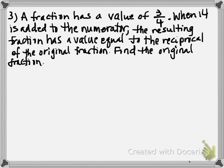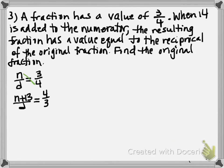In the second condition, we change the numerator by adding 14, and this new fraction equals the reciprocal of the original. Kids want to say the reciprocal of n over d is d over n, but remember the first sentence tells us the fraction has a value of three-fourths, so the reciprocal is four-thirds. Cross products on the first equation give 4n equals 3d. On the second equation, three times the quantity n plus 14 equals four d.